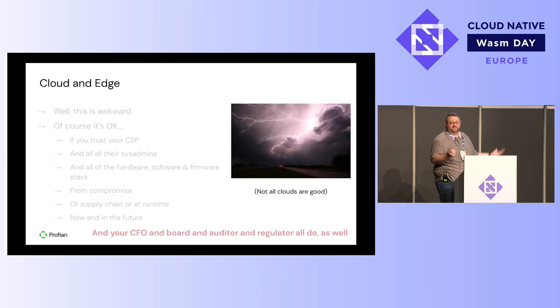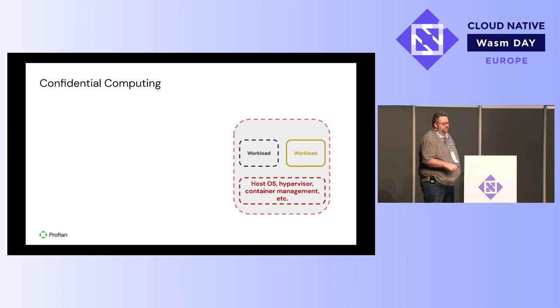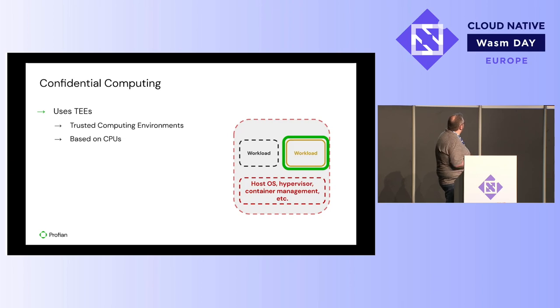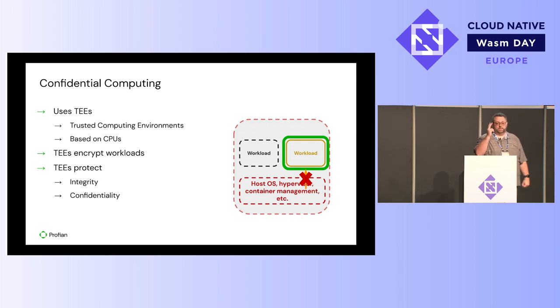This is fine as long as you trust your CSP and all of their sys admins and all of the hardware, software, and firmware stack — which is, of course, millions of lines of code. There's also risk from compromise or supply chain attack on the operating system. Not all clouds are good. How Enarchs is different is that we use confidential computing — a new set of hardware technologies from Intel, AMD, and ARM (which has announced ARM Realms). This allows you to create an application or virtual machine within which the memory pages are actually encrypted, so even if the host can scan memory, with a properly set-up confidential application you won't be able to tamper with it.